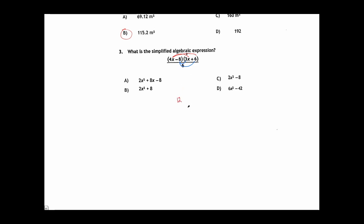What this gives me is 4 times 3, which is 12, x times x, x squared. Then 4x times 6 will give positive 24x. Negative 8 times 3x is negative 24x. And finally, negative 8 times 6 is negative 48. All of this is still over 6. Now I'm going to notice that these two middle terms, positive 24x and negative 24x, cancel each other. So if I continue simplifying, I'm left with 12x squared minus 48 over 6.